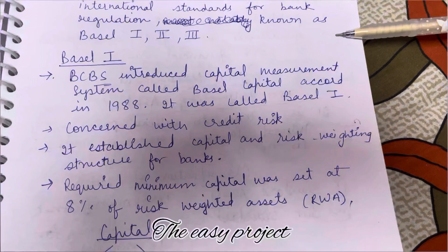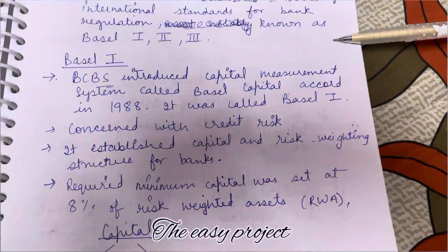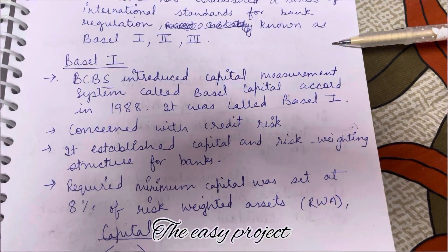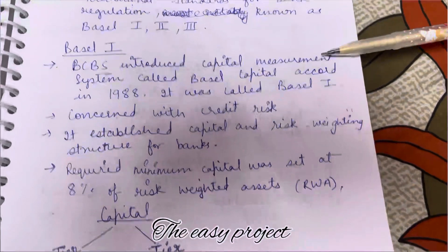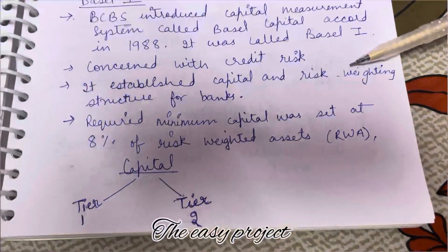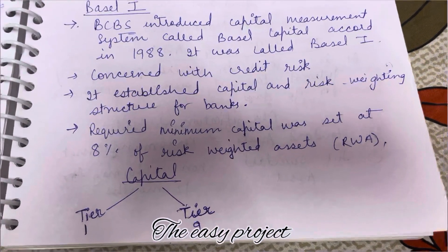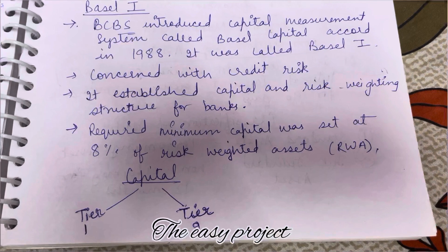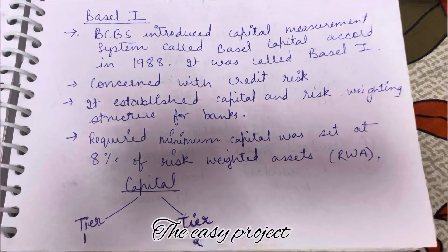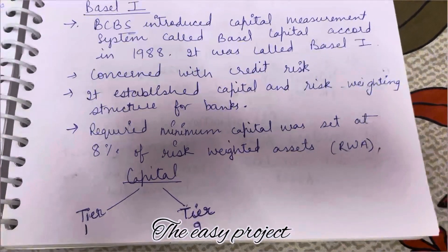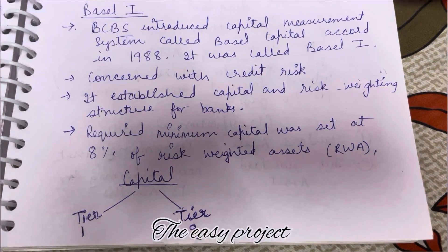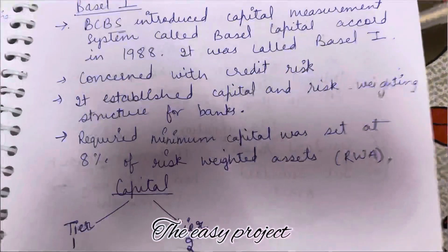Basel 1: BCBA announced the capital measurement system in Basel 1, and it was called Basel Capital Accord. It was in 1988. The main motive was to measure risk and capital. The minimum capital, according to risk, was set up to 8%.